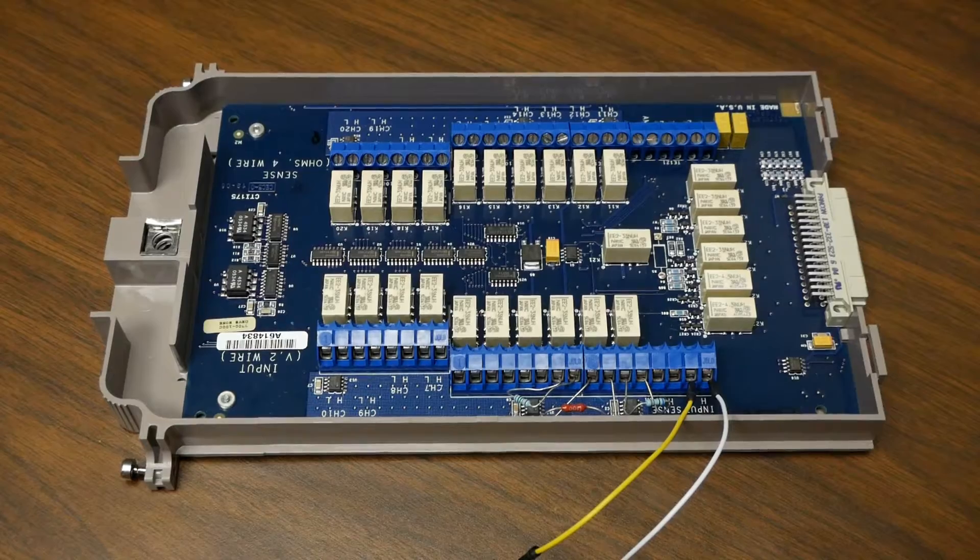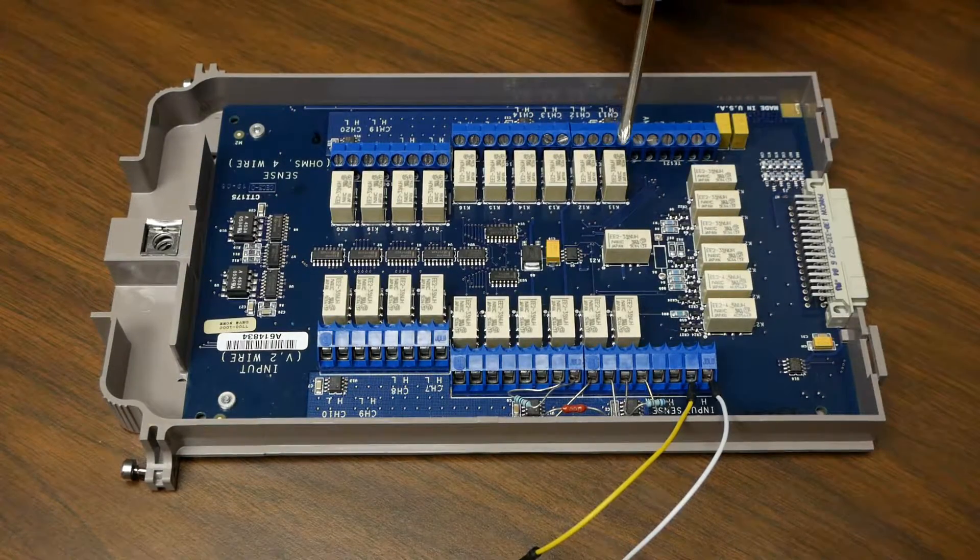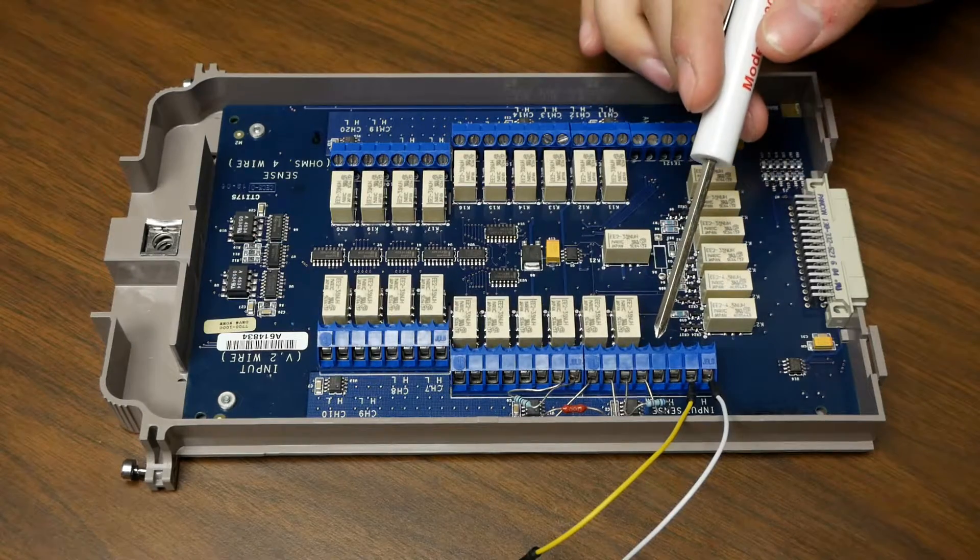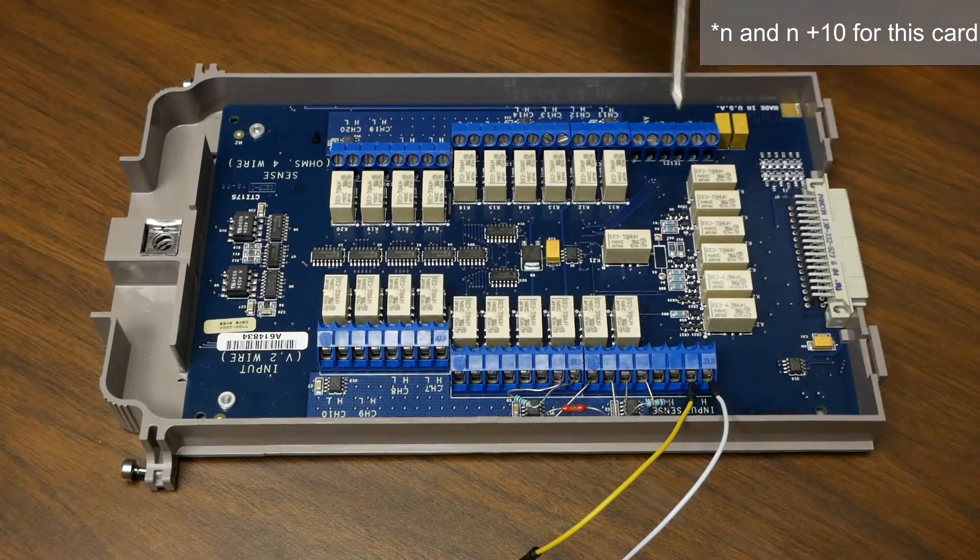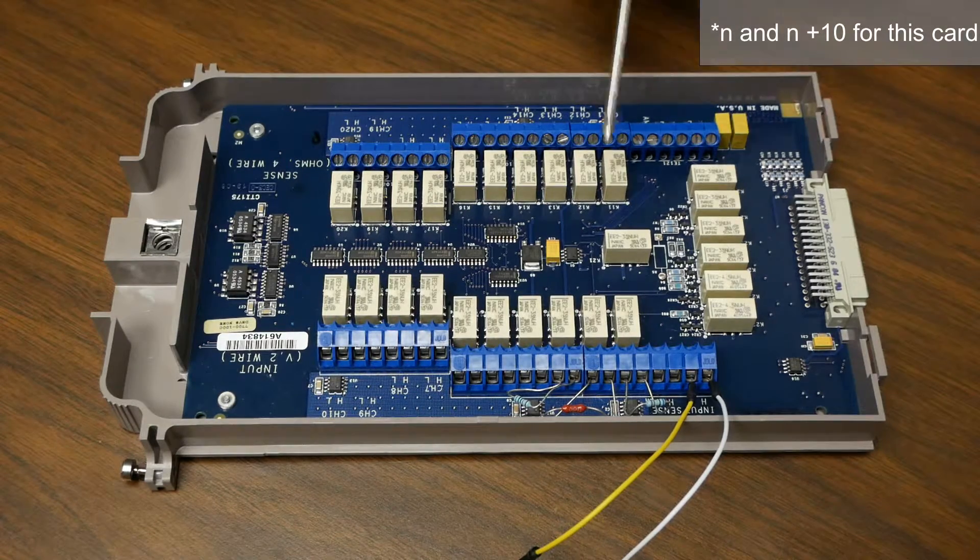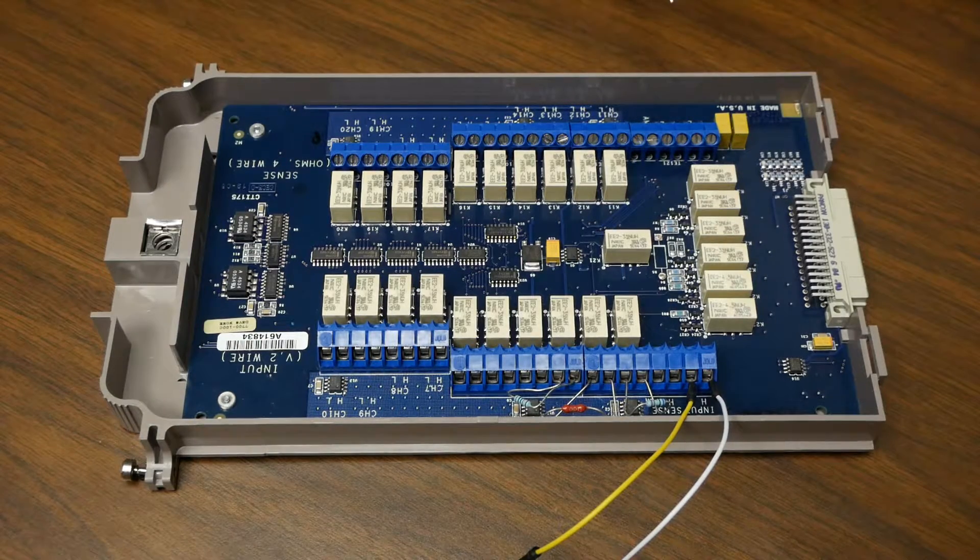If you were to run a four-wire test, not only would we have our sense connections, but also you would need to connect your resistors or your DUTs on the N and N plus 1 channels to get all four-wire connections. For example, channel one would have the high and low and channel 11 would have the sense high and low of your DUT.